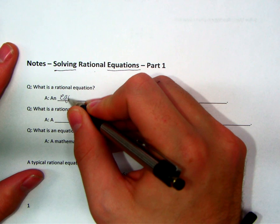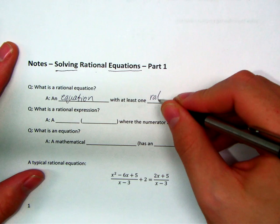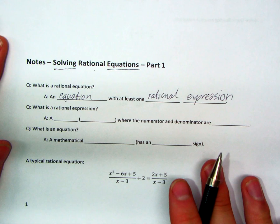So what is a rational equation? It's an equation, obviously. But it has at least one rational expression. It's got at least one of those. If you see an equation with a rational expression in it, you found a rational equation.